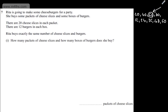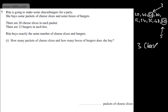So that gives us 3 packets of cheese and 5 boxes of burgers. How many packets of cheese does she buy? 3. And how many boxes of burgers? 5. I've done this manually, but if you spot the lowest common multiple straight away, that's what it's going to be.